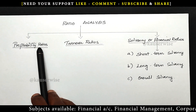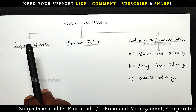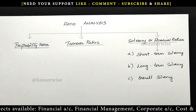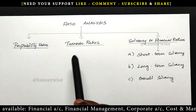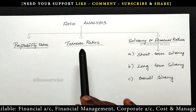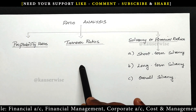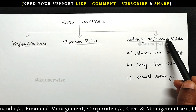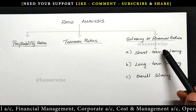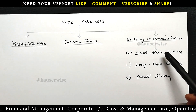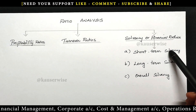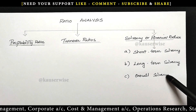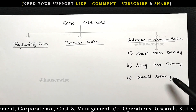Under profitability ratios, there are 15 components — that is, 15 ratios. Under turnover, 10 ratios are there. And under solvency, it has three divisions: short-term solvency, long-term solvency, and overall solvency.